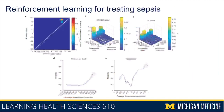From panel B, there are a lot of patients in the clinician policy that got very little IV fluids and a very low dose of blood pressure-raising medication known as vasopressors, whereas the amount of fluids given was more spread in the policy learned by the reinforcement learning algorithm. When they looked at their validation set, they found that where zero represents what the machine learning algorithm recommended, any other value — less or greater — for both IV fluids and vasopressor was associated with higher mortality.